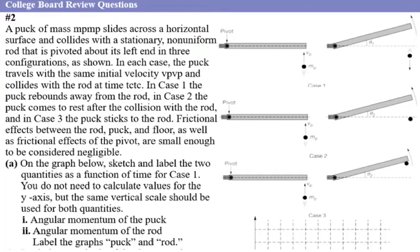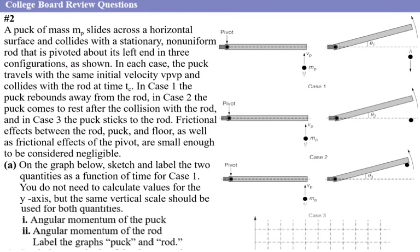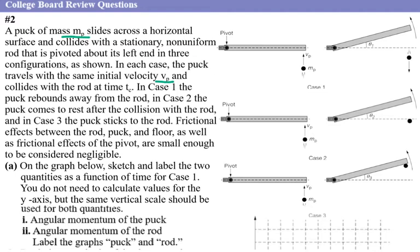This is a College Board review question. A puck of mass m_p slides across a horizontal surface and collides with a stationary non-uniform rod that is pivoted above its left end, in three configurations as shown. In each case the puck travels with the same initial velocity v_p and collides with the rod at time t_c.